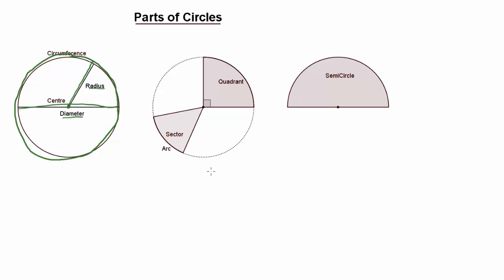There are several different ways that we can divide a circle up. If we look at the area enclosed by two radii of the circle we end up with an area called a sector, and the length of the circumference associated with that sector is called an arc. If we've got a sector with a 90 degree angle then that sector is called a quadrant. Similarly, if we have half a circle, that's known as a semicircle.